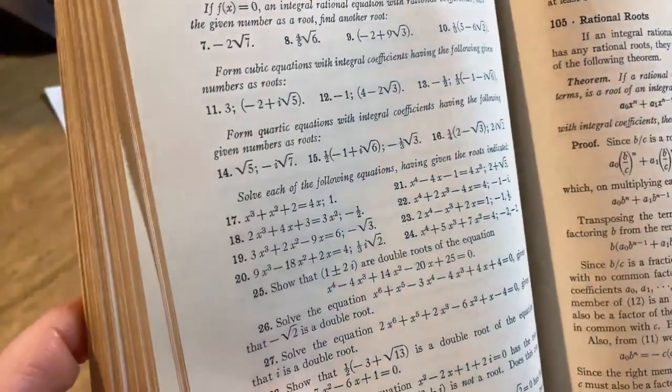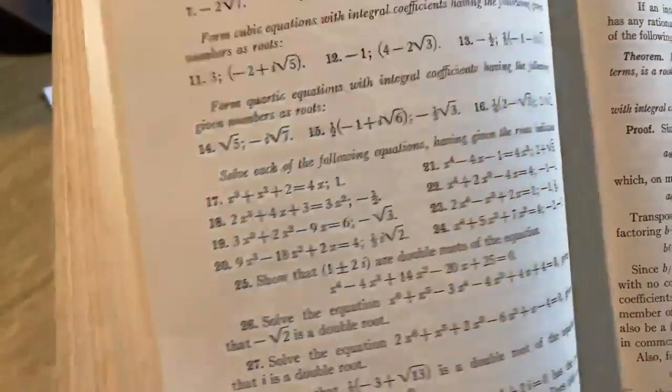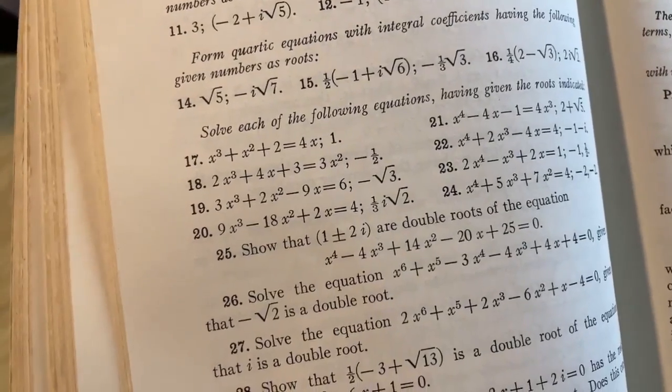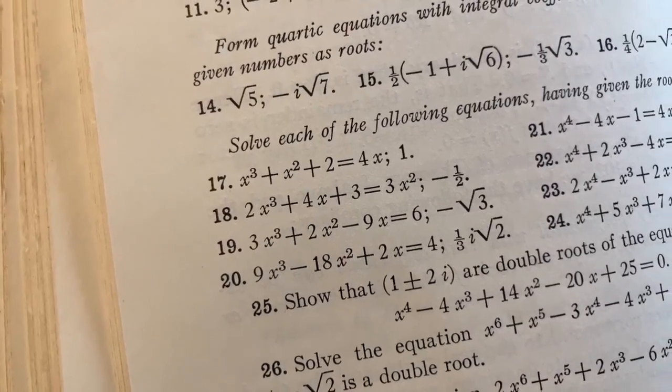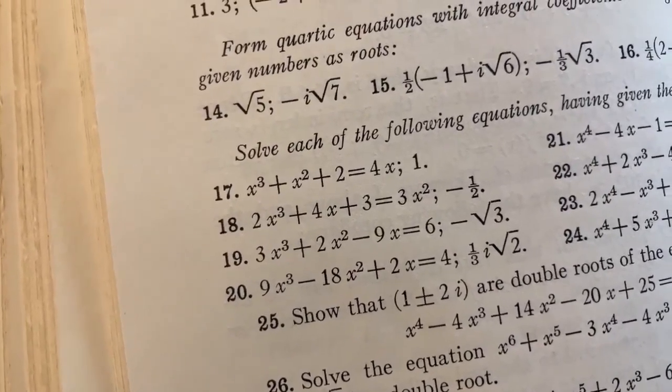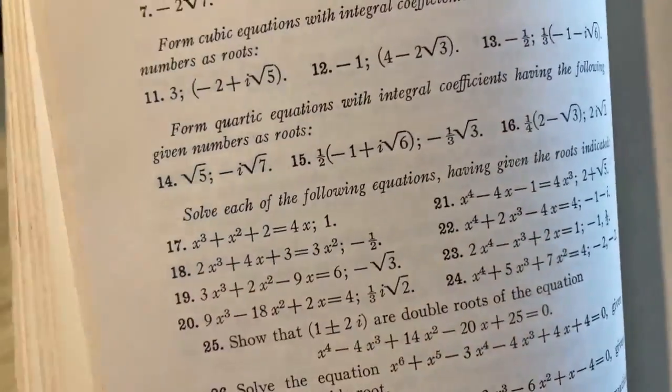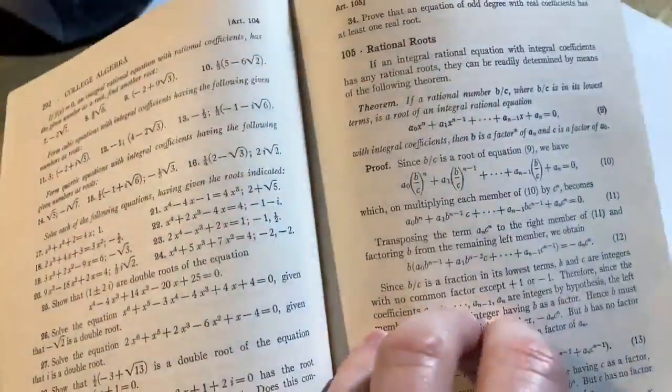I think this makes a great workbook or a great textbook for someone who is just looking for extra examples. That looked interesting. Let's take a look at some of these exercises here. Wow. Solve each of the following equations having given the roots indicated. I see. So they give you one of the roots and you have to find the other ones. So for example, x cubed plus x squared plus 2 equals 4x and 1 is one of the roots. Right. So if you use synthetic division, you should get a remainder of 0. And you can reduce it to a quadratic and solve that. This is something you would do in a college algebra course in college. Here it talks about rational roots. Yeah. All standard material. Plenty of examples. Just a really solid book.